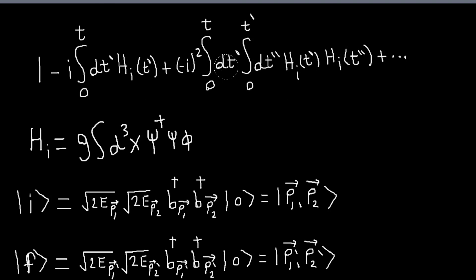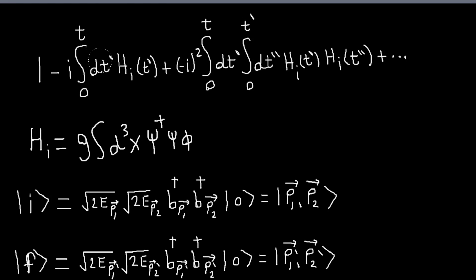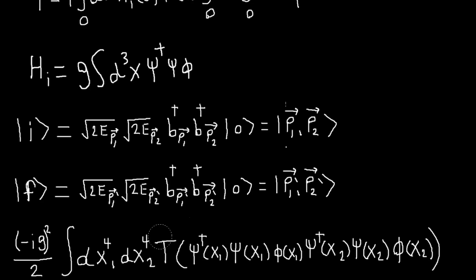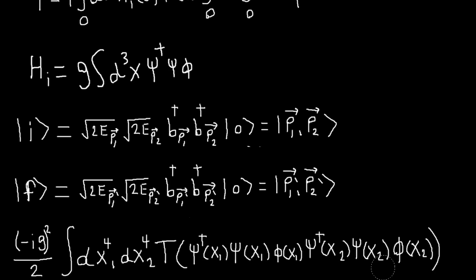So the lowest order non-vanishing term will be the second-order term, and we need to calculate this. Written in this form, it is time-ordered because of the way the bounds are written, but that's not actually how you practically evaluate this term. The interaction Hamiltonian is an integral over space, so we end up with a double integral over spacetime. We're not going to worry about the bounds, but we still have to worry about time-ordering our operators.